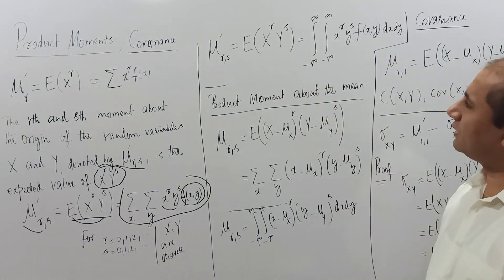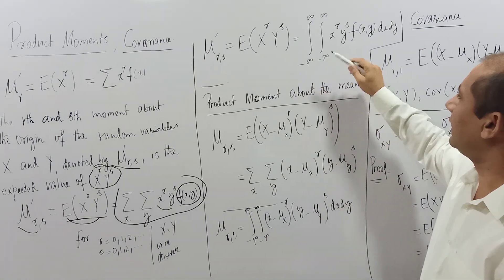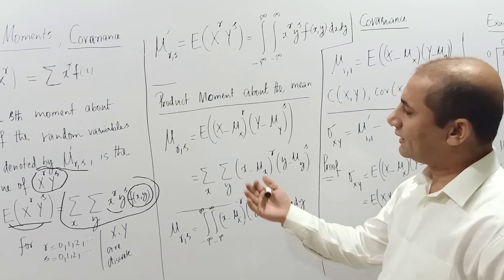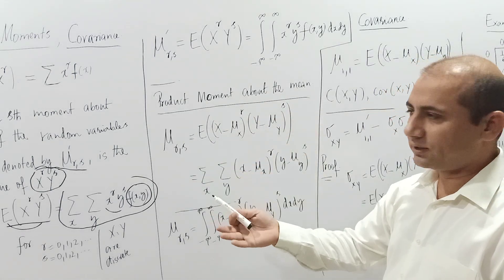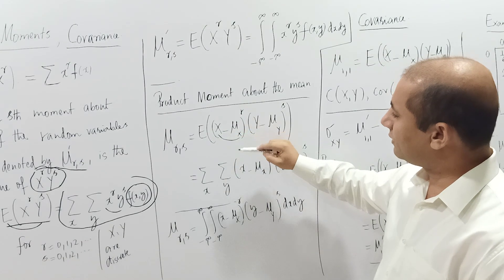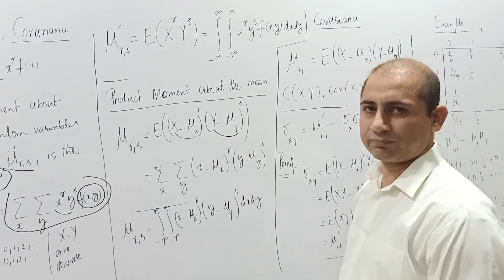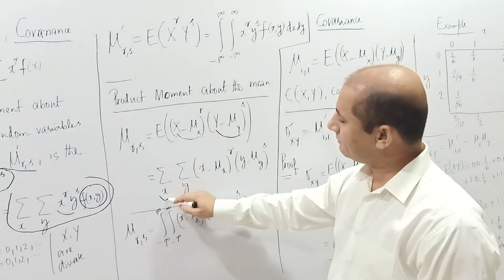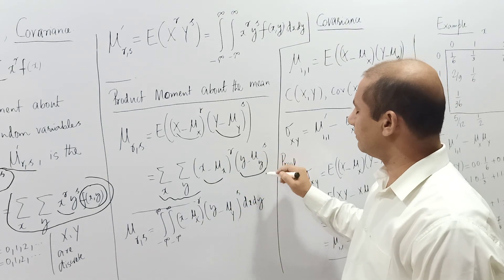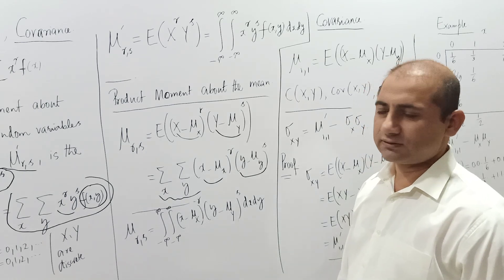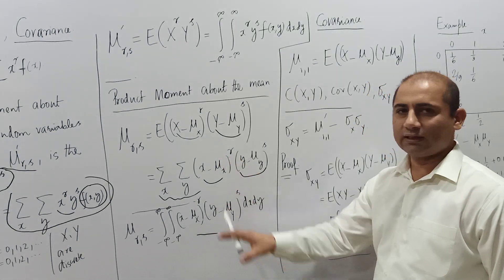For the continuous random variable case, instead of summation we use integrals, and everything else stays the same. Similarly, as we studied for one variable, we also define product moments about the mean. For two variables, the r-th and s-th moment about the mean involves (x − mu_x)^r * (y − mu_y)^s. For the continuous case, the summation is replaced by an integral from minus infinity to plus infinity.